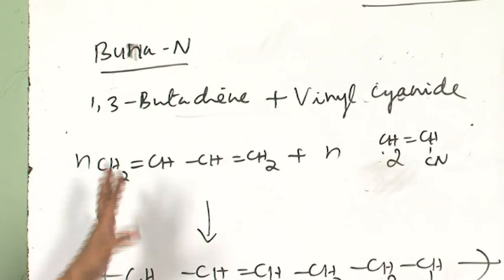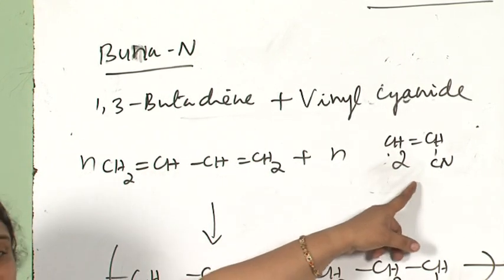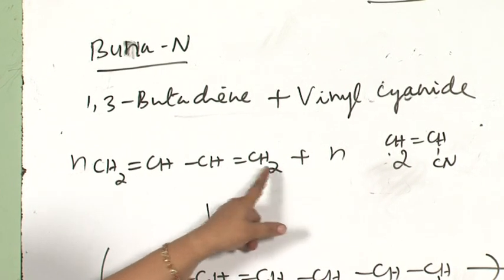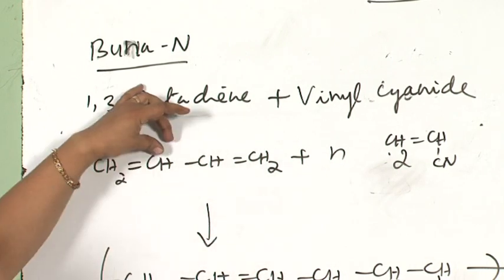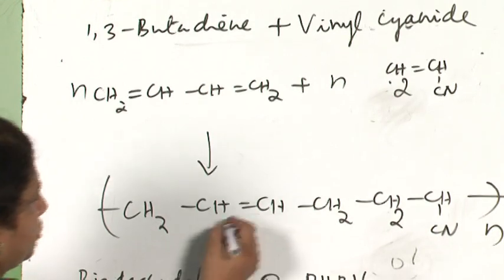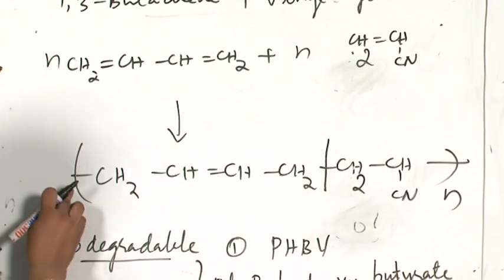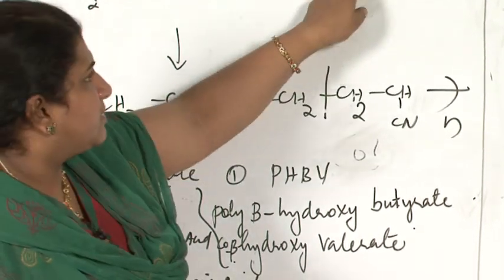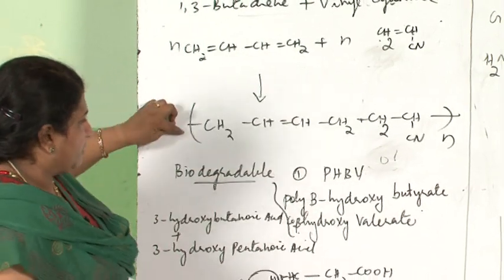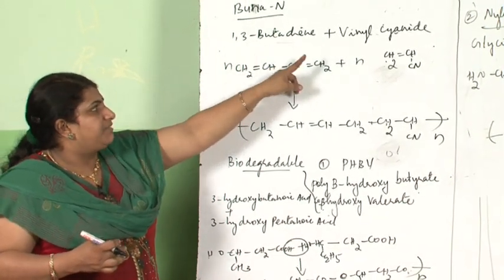Buna N is a co-polymer of 1,3-butadiene and vinyl cyanide (CH2=CH-CN). As with Buna S, the terminal double bonds of butadiene break, a new bond forms between those two carbons, and valencies link to the vinyl cyanide unit. The resulting polymer is called Buna N — butadiene and vinyl cyanide instead of butadiene and styrene.